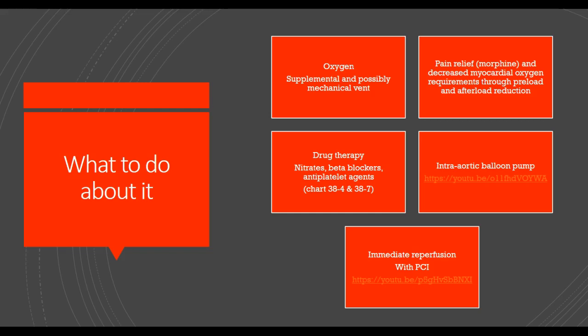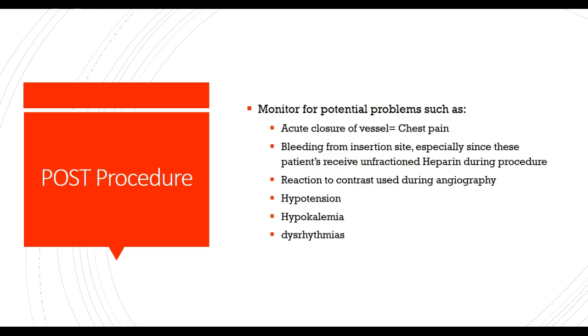Management of cardiogenic shock: supplemental oxygen, possibly mechanical ventilation, pain relief with morphine — which decreases myocardial oxygen requirements through preload and afterload reduction — drug therapy including nitrates, beta blockers, and antiplatelet agents, and an intra-aortic balloon pump. Take a look at the hyperlink on the intra-aortic balloon pump to see how it works. It's a device where a balloon is sent in with a wire and a suction device at the end that cuts through the thrombus and then suctions it out as it pulls back. Immediate reperfusion with PCI is also indicated.